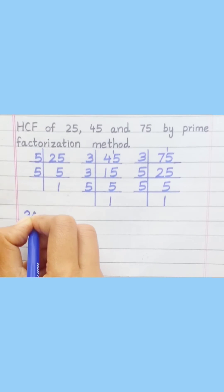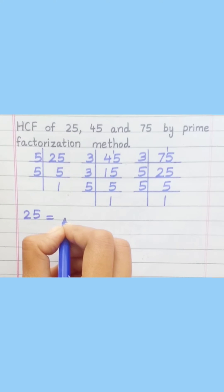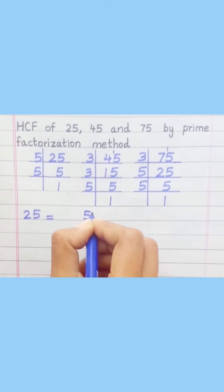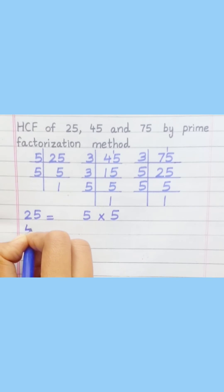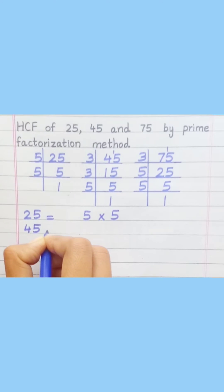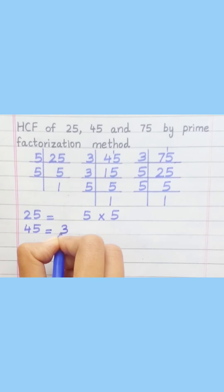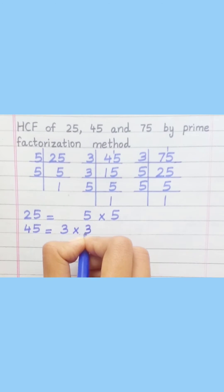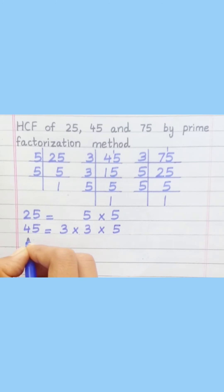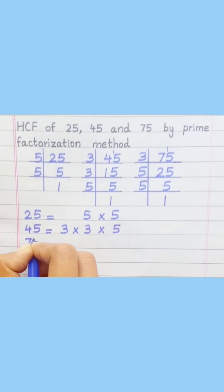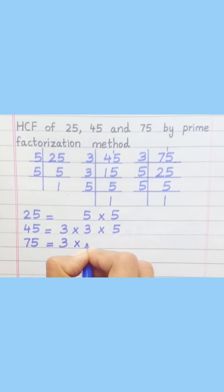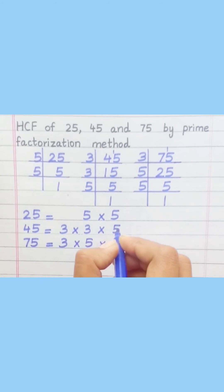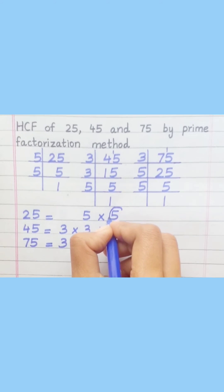25 equals 5 multiply 5. 45 equals 3 multiply 3 multiply 5. 75 equals 3 multiply 5 multiply 5. Loop the factors that are common to all of the given numbers.